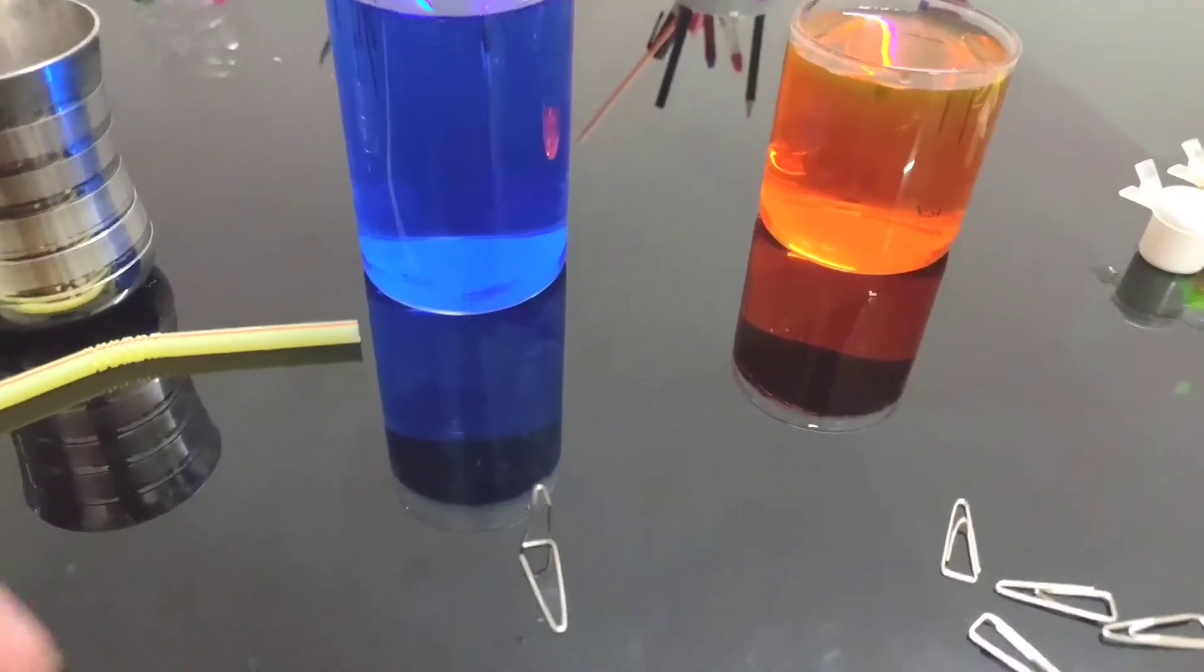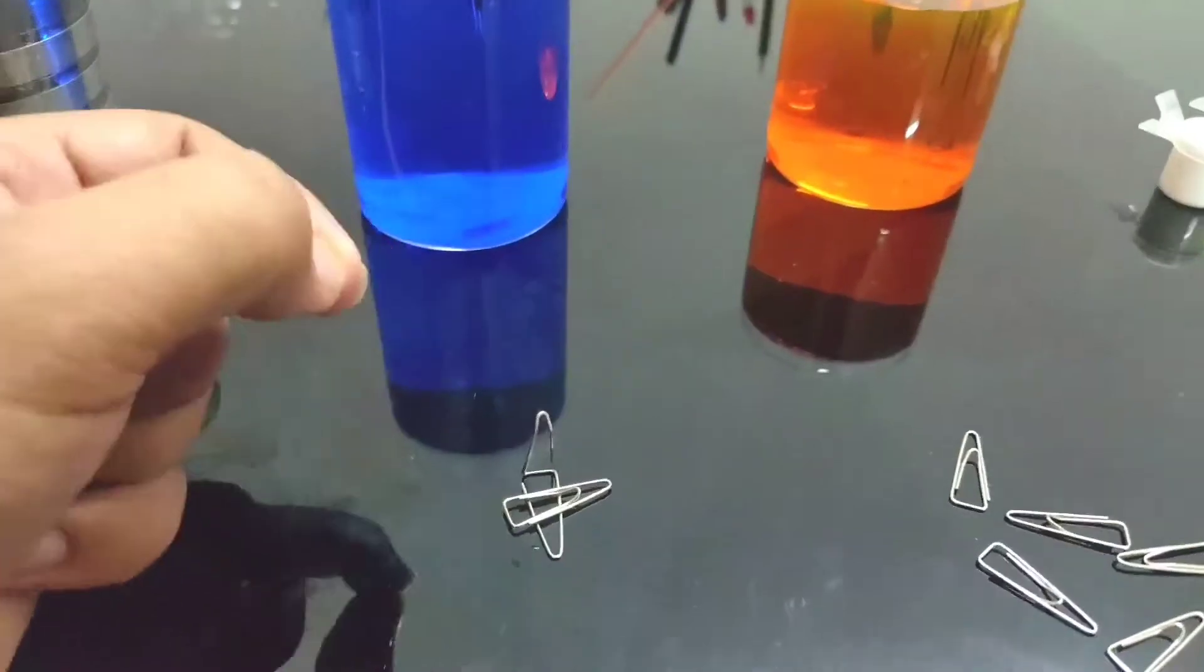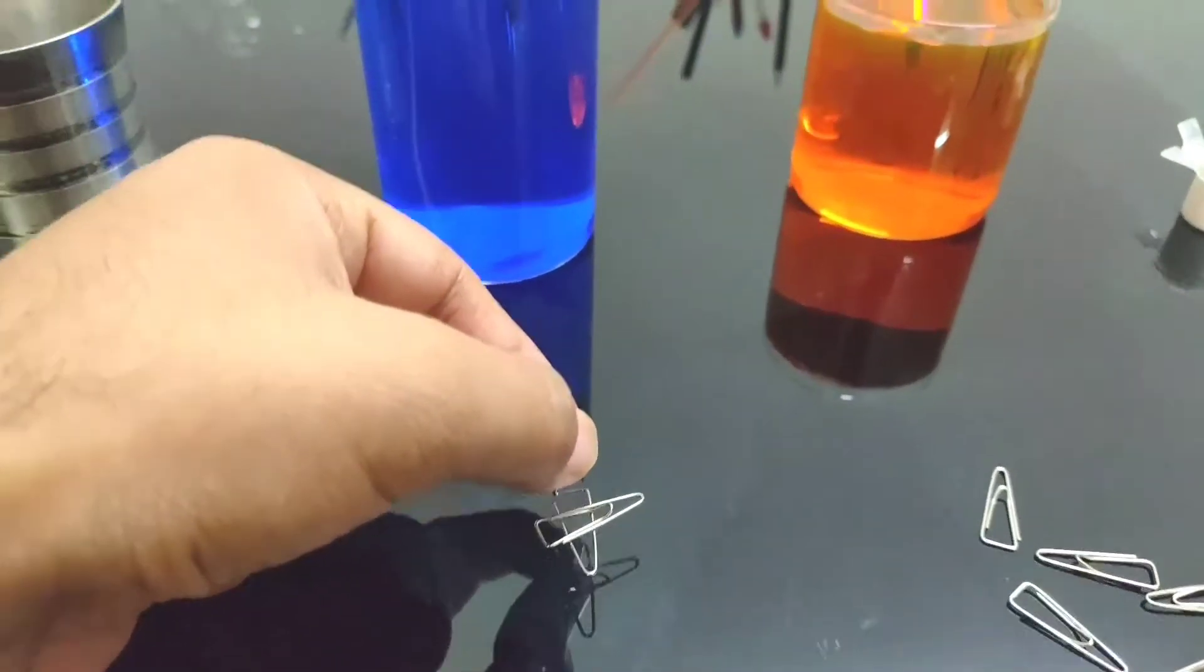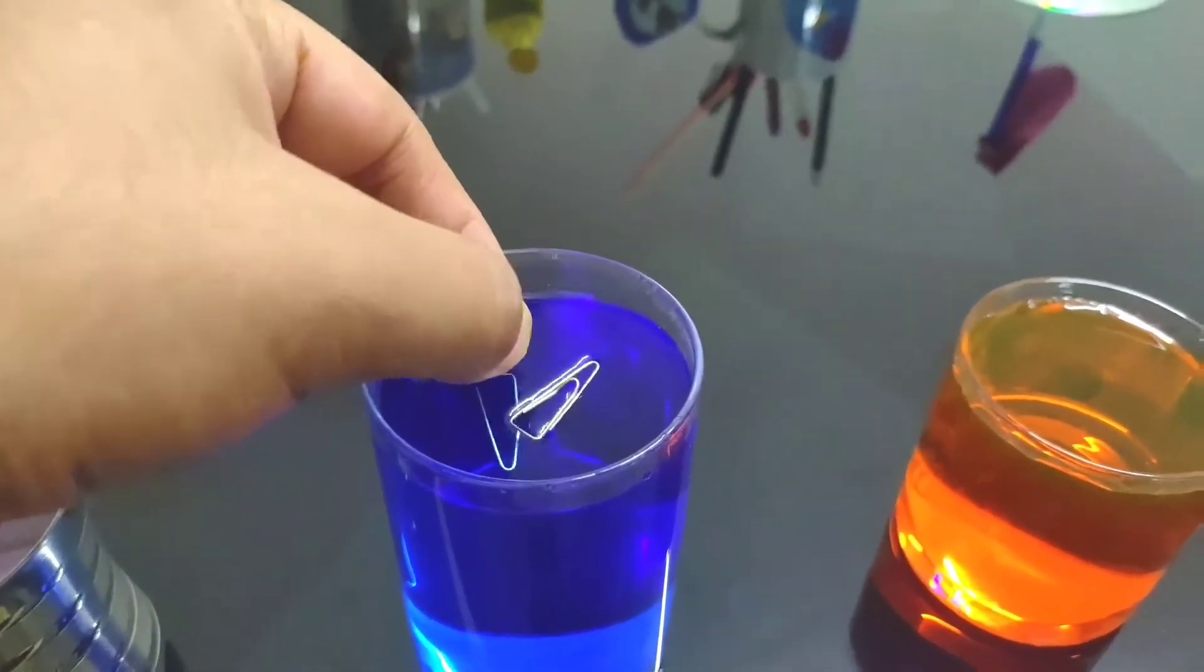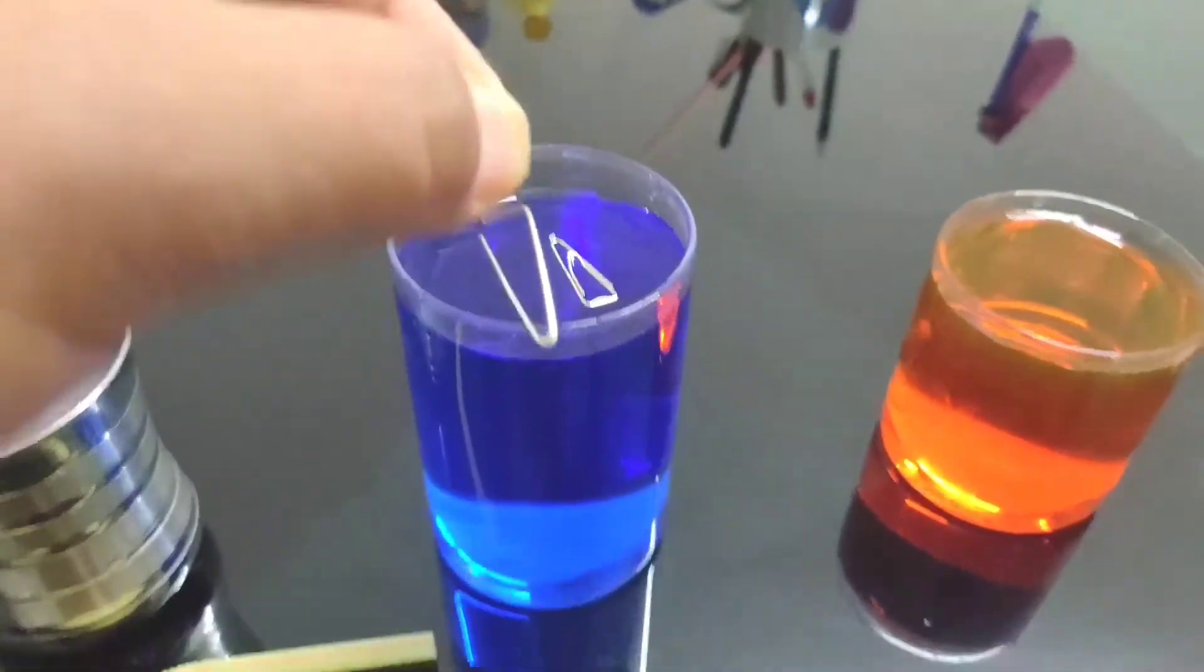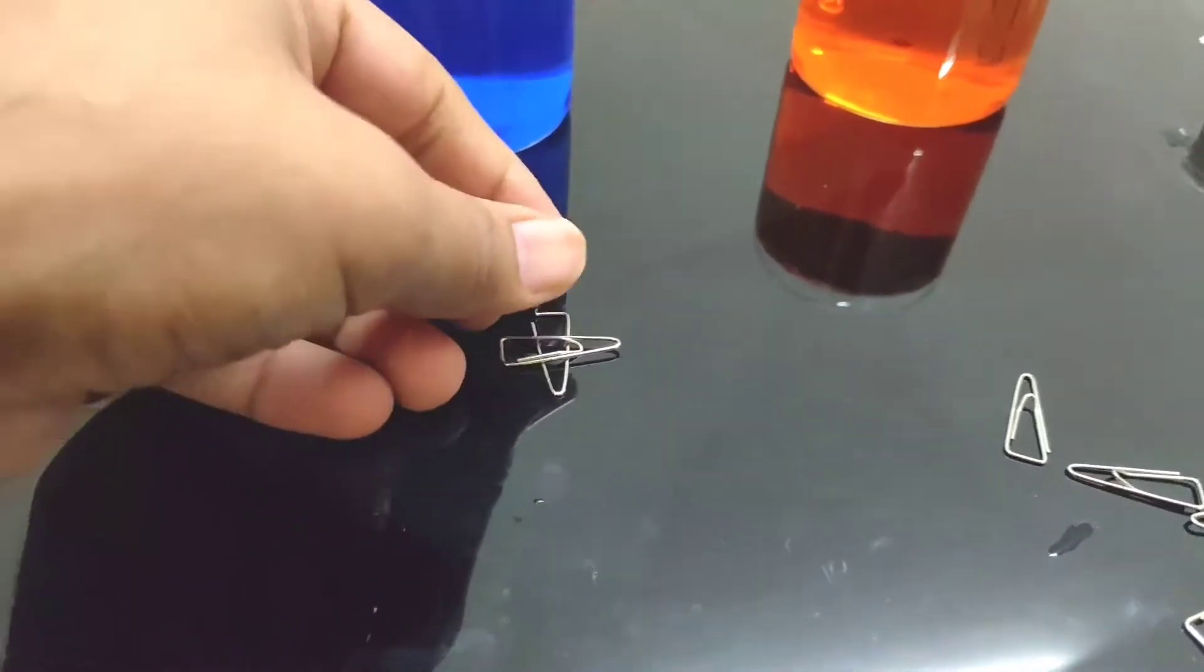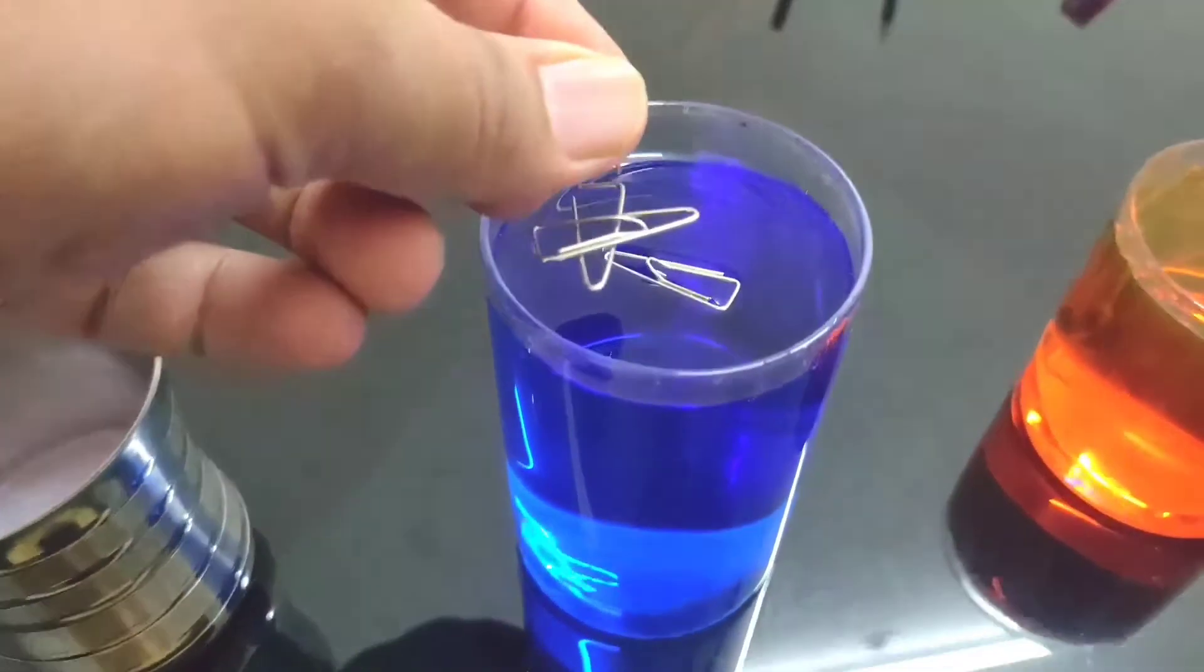You have to place it on top like this, and just put it up. As you bring it near the water surface, you will see that it can float. I'll show you one more time. It's very simple - you make the paper clip mechanism, place the paper clip on top, put it up, and as soon as you place it on the water surface, it can float.